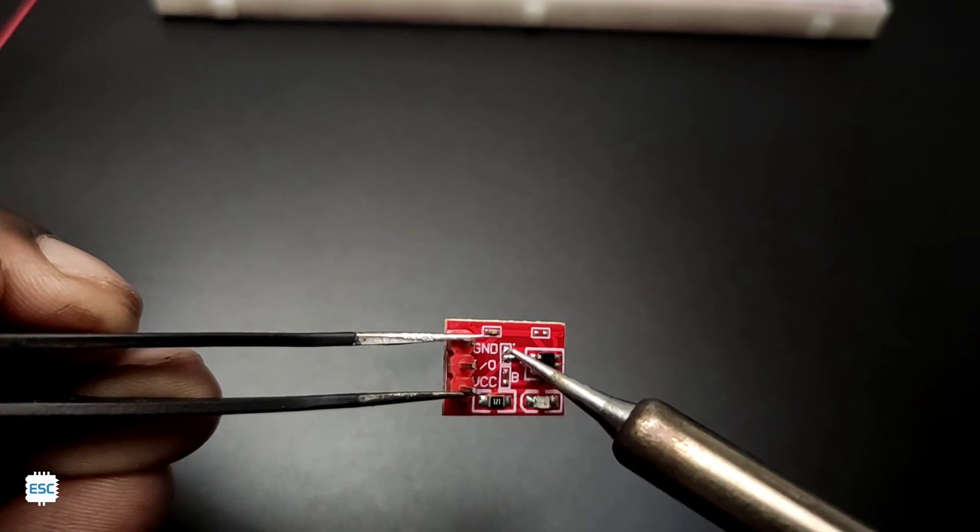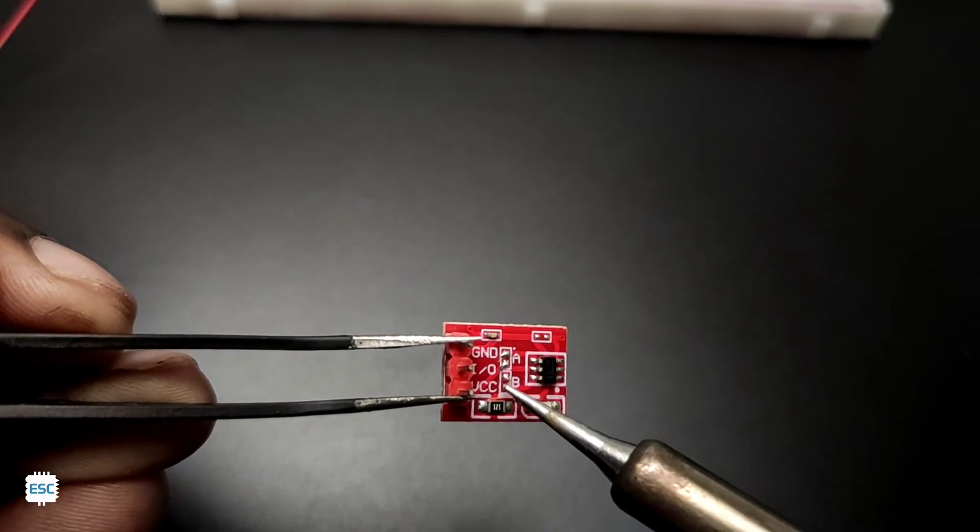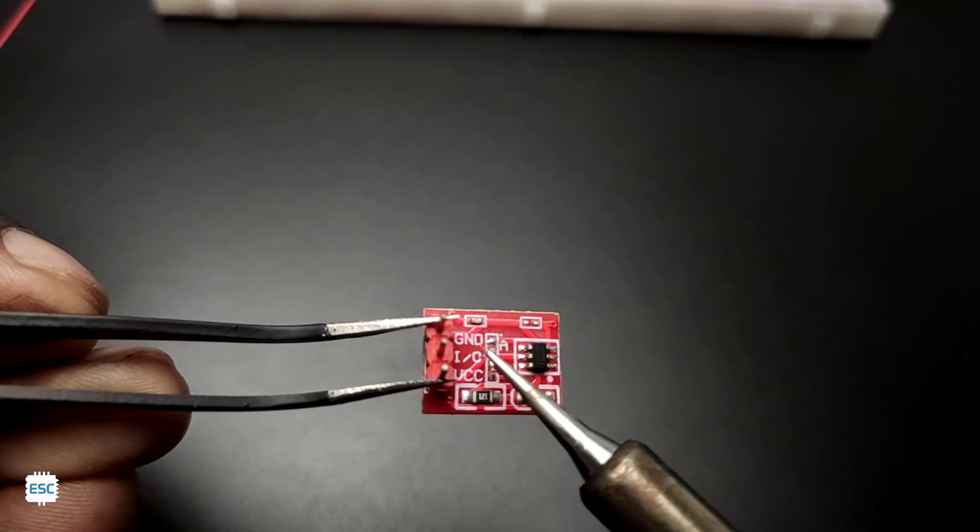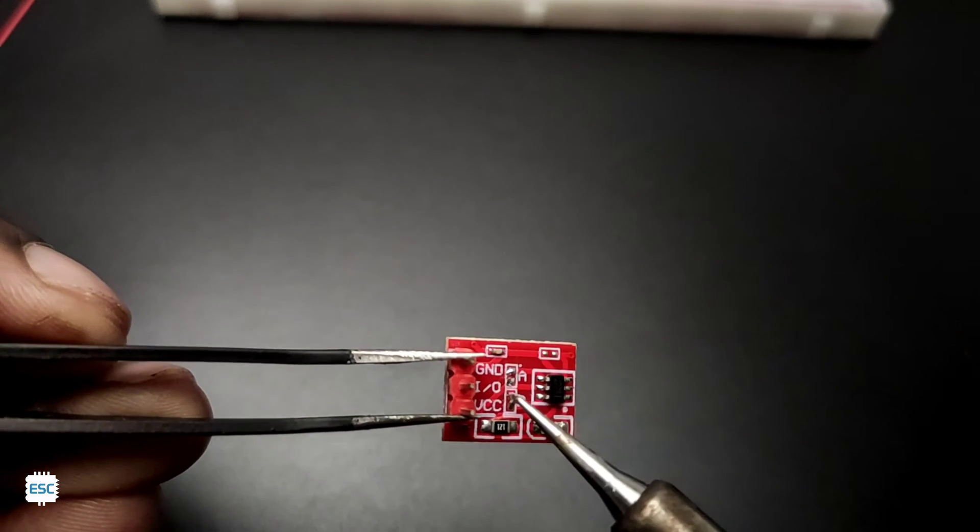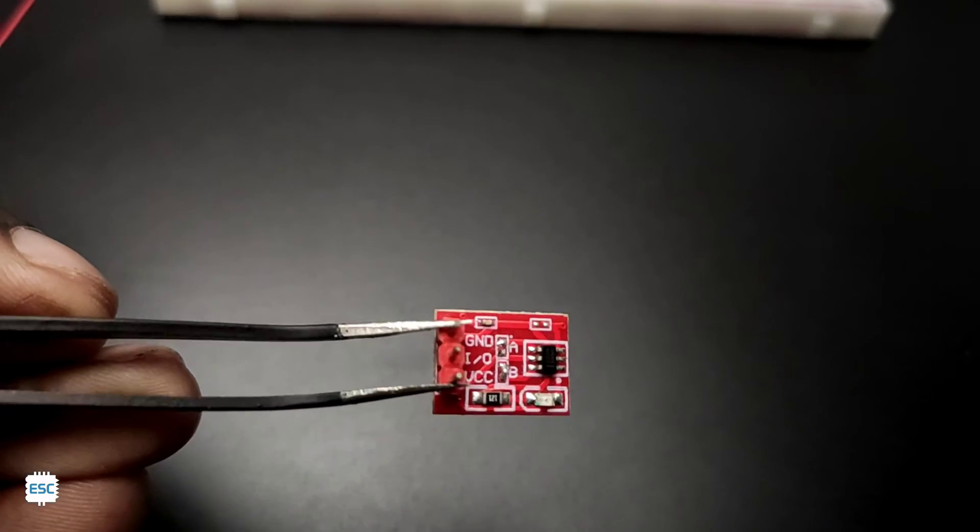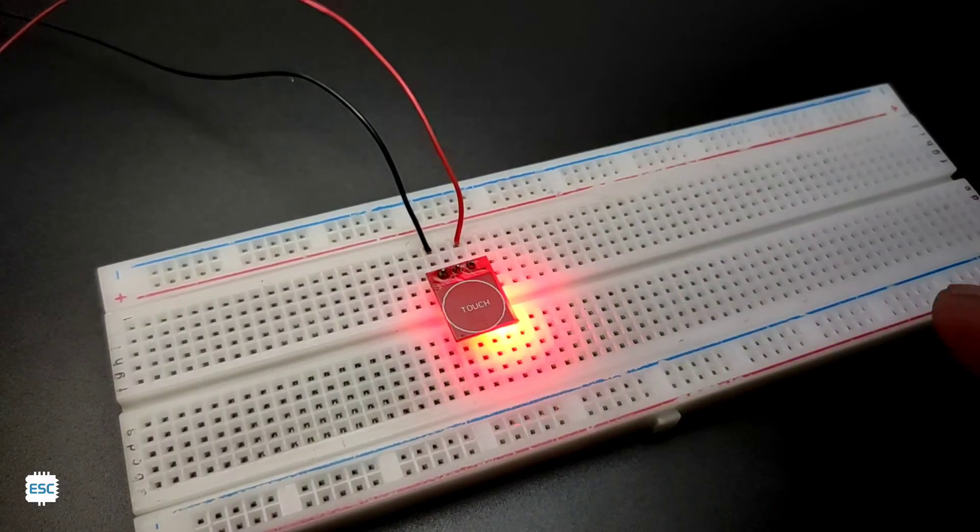Now let's connect point B and desolder point A. Now it's acting like a latching switch, which is a toggle mode.